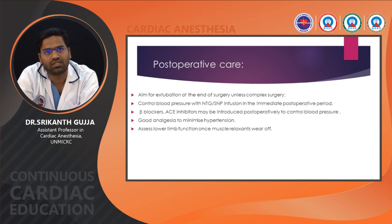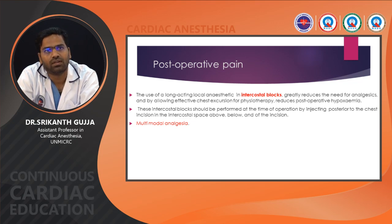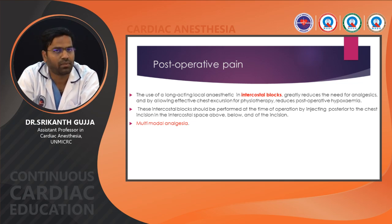Postoperative care aims for extubation as soon as possible if it is not a complex surgery. Assess lower limb function once muscle relaxants wear out. The use of long-acting local anesthetics in intercostal block generally reduces the need for analgesics. Good analgesia leads to fewer postoperative pulmonary complications. Analgesia can be provided with intercostal, paravertebral, or thoracic epidural approaches, or multimodal analgesia for better pain control.